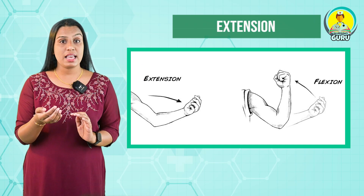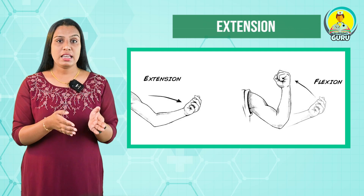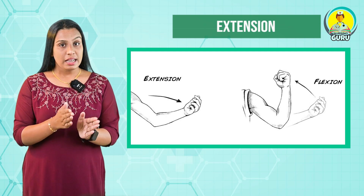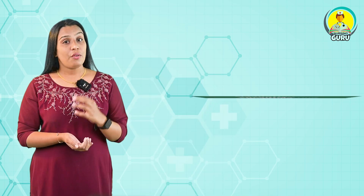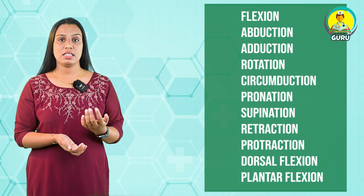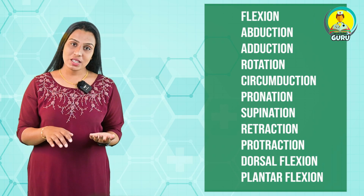Another example is 'extension.' Extension refers to the movement that increases the angle between two body parts. In other words, it is the movement that increases the angle between two bones and the body part that takes place in the posterior direction. Similar questions may relate to body movements — for example: flexion, abduction, adduction, rotation, circumduction, pronation, supination, retraction, protraction, dorsal flexion, and plantar flexion.